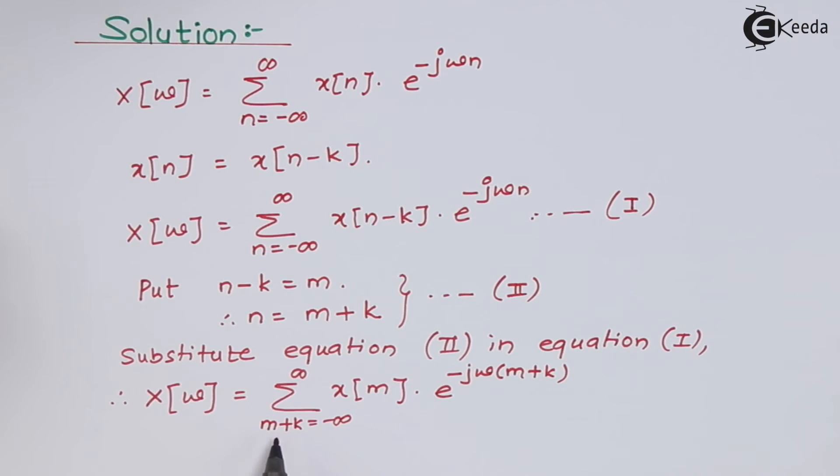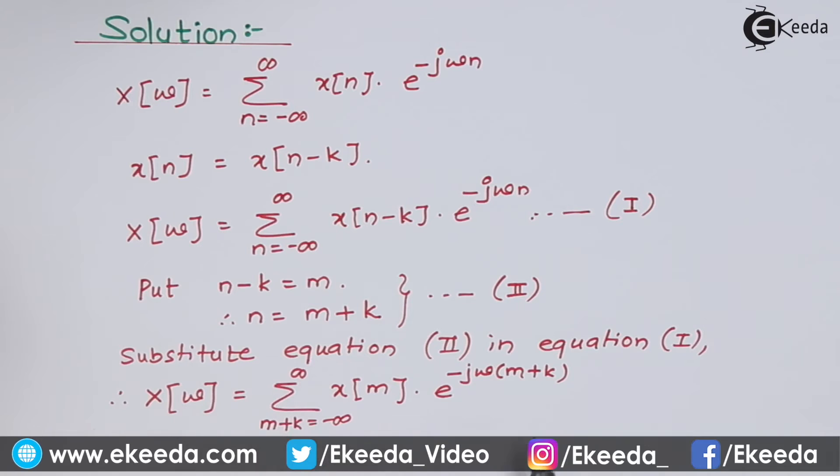Now look at here. If we add minus k in the limits, or you can say on both sides, then what will happen? Minus infinity minus k remains minus infinity, as well as plus infinity minus k will remain as infinity. And look here on the left hand side: if we add minus k in m+k, then k and k will get cancelled. So we have only m and the limit will start from minus infinity to infinity only.